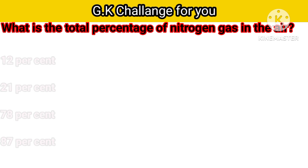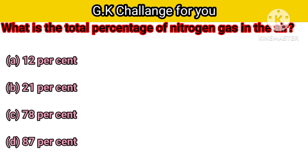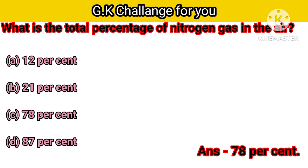Now, what is the total percentage of nitrogen gas in the air? Option A: 12%, B: 21%, C: 78%, D: 87%. Your right answer is 78%.